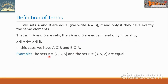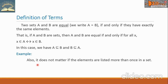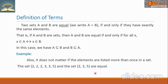For example, set A with elements {2, 3, 5} and set B with elements {3, 5, 2} are equal, because they have the same elements — the order of elements does not matter. Also, it does not matter if elements are listed more than once in a set. For example, {2, 2, 2, 2, 3, 3, 5} and {2, 3, 5} are equal.